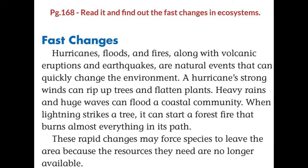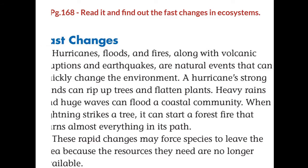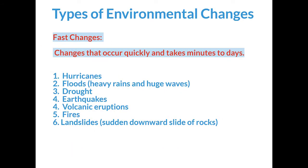What about fast changes in ecosystems? Fast changes occur quickly and take minutes to days. Examples of these fast changes are hurricanes and tornadoes, floods, heavy rains, huge waves, drought, earthquakes, volcanic eruptions, fires, and landslides — the sudden downward slide of rocks.